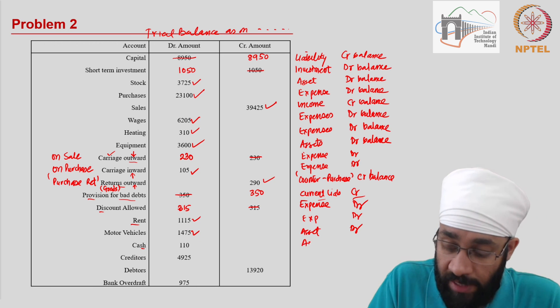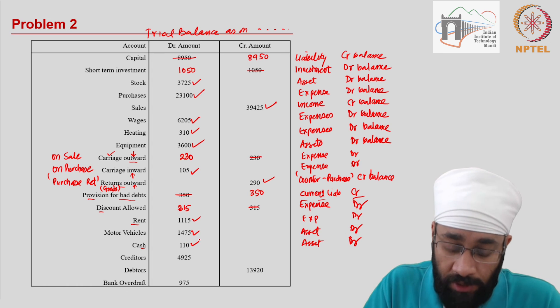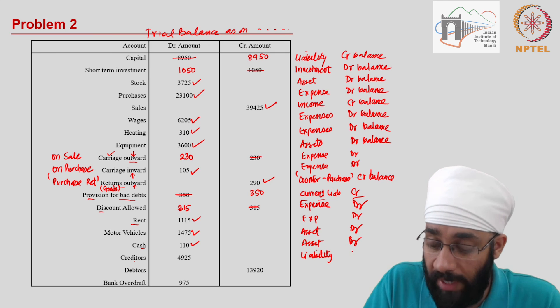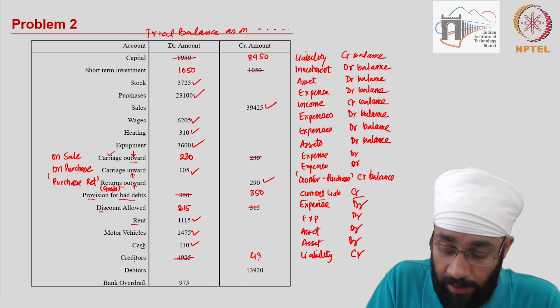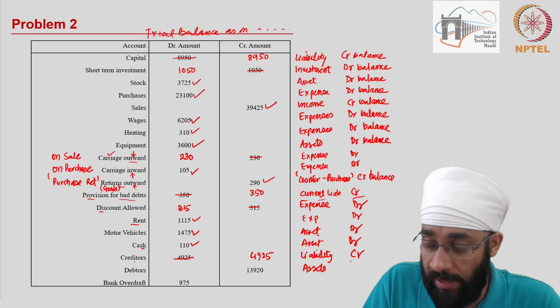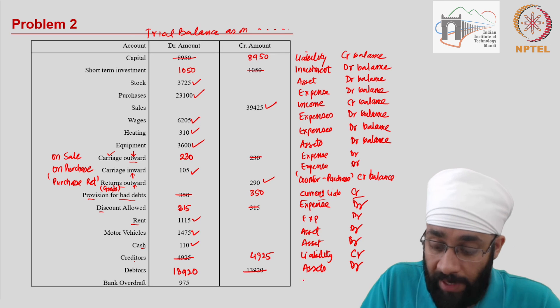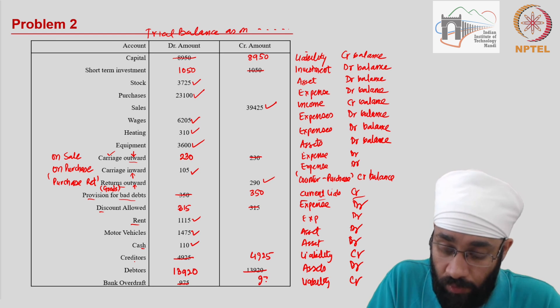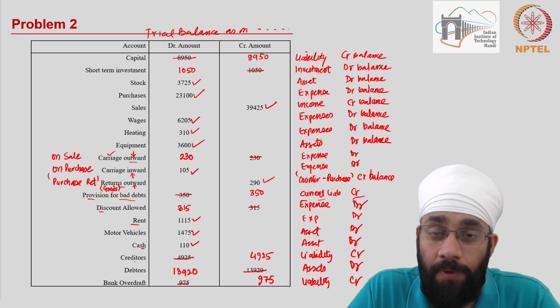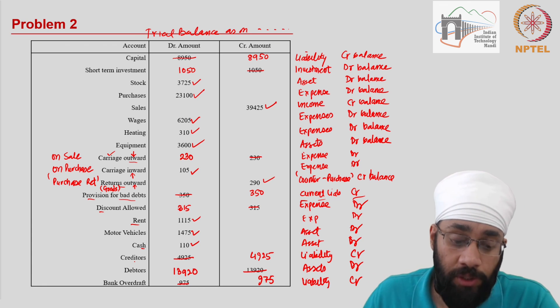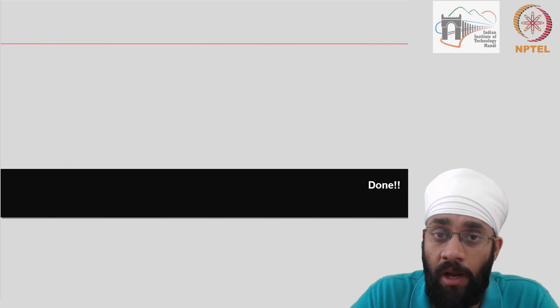Creditors are liabilities. All liabilities have credit balance. This is not written correctly—it needs to be moved. And then you have debtors. Debtors are assets. All assets have debit balance. This needs to be moved to the other side. Bank overdraft is a liability. All liabilities have credit balance, so this needs to be moved to the opposite side. So that is how you prepare trial balance. That is how you correct trial balance. I will see you in the next video with some more discussion regarding the trial balance statement.